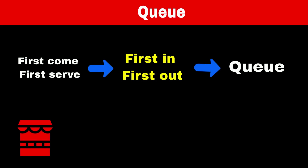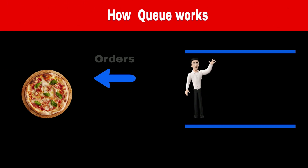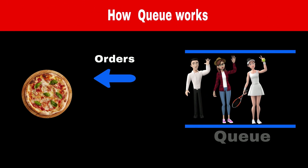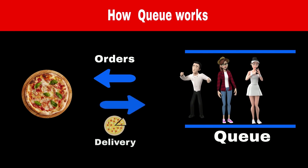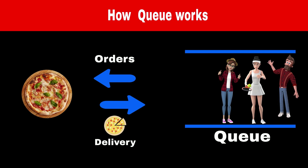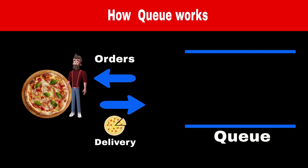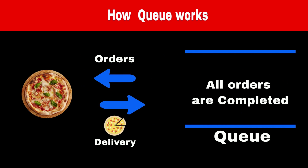Consider a queue as a line in front of any restaurant — whoever is at the front gets food first. We got orders from Ross, Monica, and Rachel, so we add them to the queue. Ross is at the front, so when the first pizza is ready, we deliver it to him and remove him from the queue. Now Monica is at the front and will get the next order. If Chandler places an order, he is added to the queue. Monica gets the second order and is removed; Rachel gets the third; then Chandler gets his. When the queue is empty, all orders have been fulfilled.